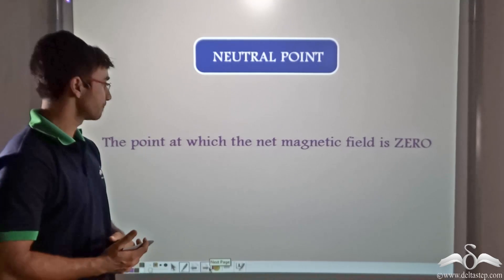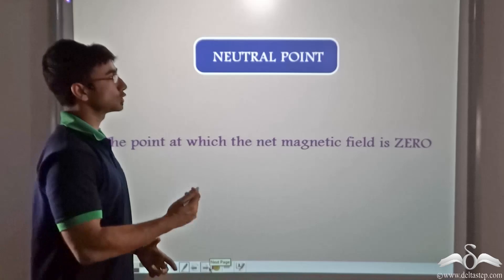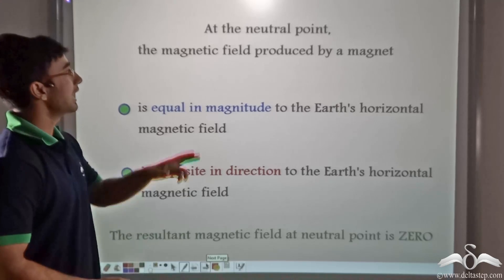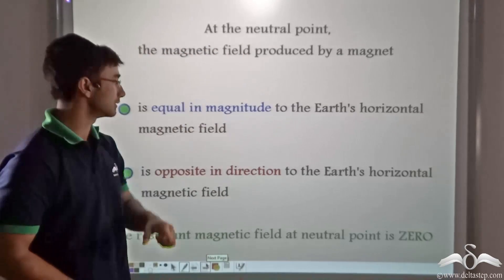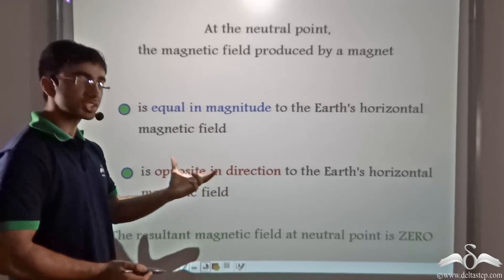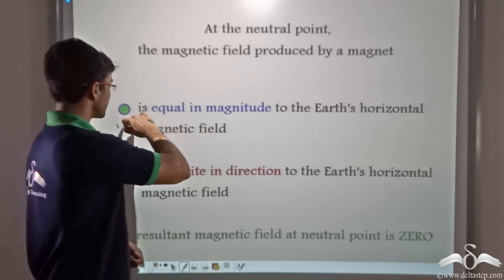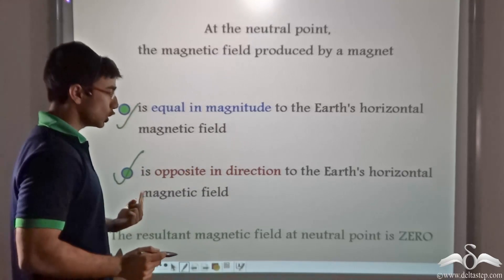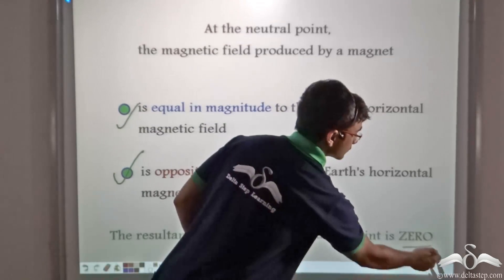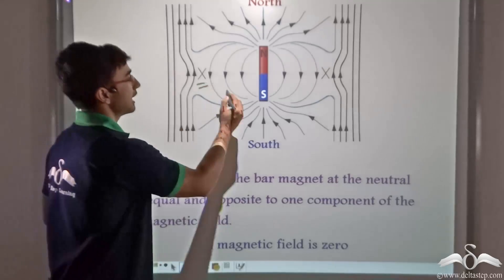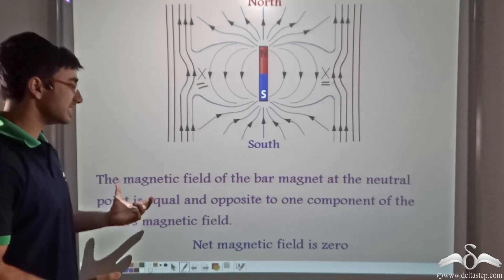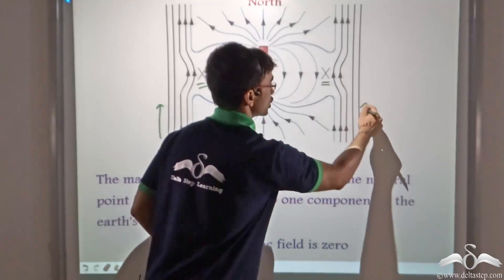These points are known as neutral points — the point at which the net magnetic field is zero. At the neutral point, the magnetic field produced by a magnet is equal in magnitude to the earth's horizontal magnetic field, and it is opposite in direction to the earth's magnetic field. There are two aspects to remember: equal in magnitude and opposite in direction. Thus, the resultant magnetic field at a neutral point is equal to zero, because the magnetic field of the bar magnet is equal and opposite to the earth's horizontal magnetic field.